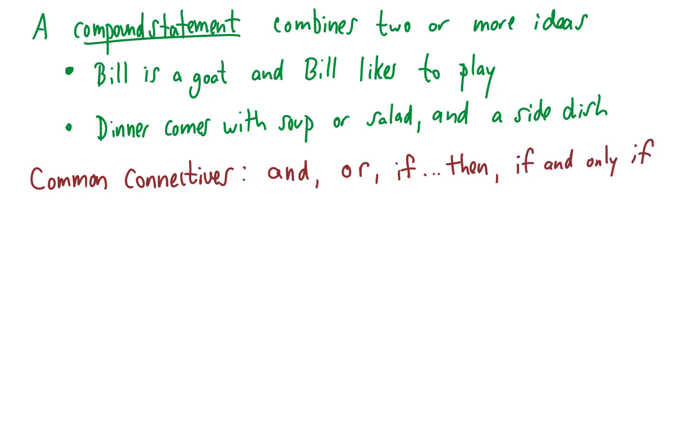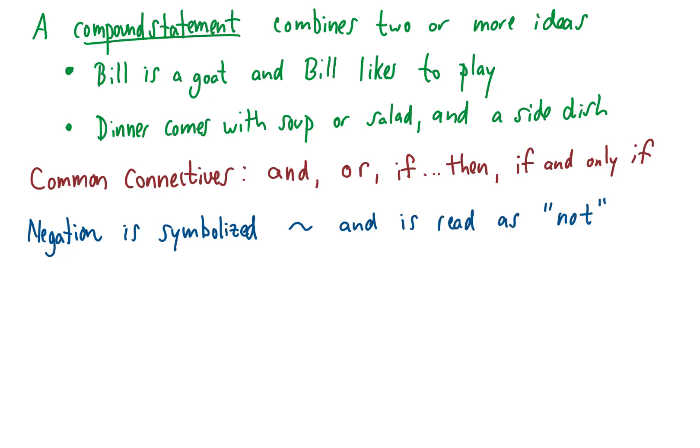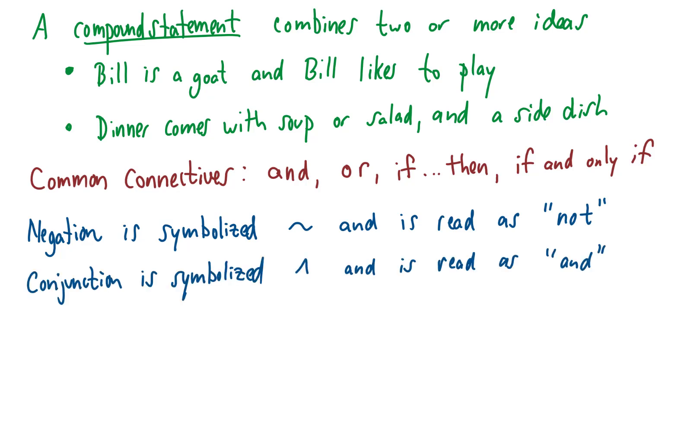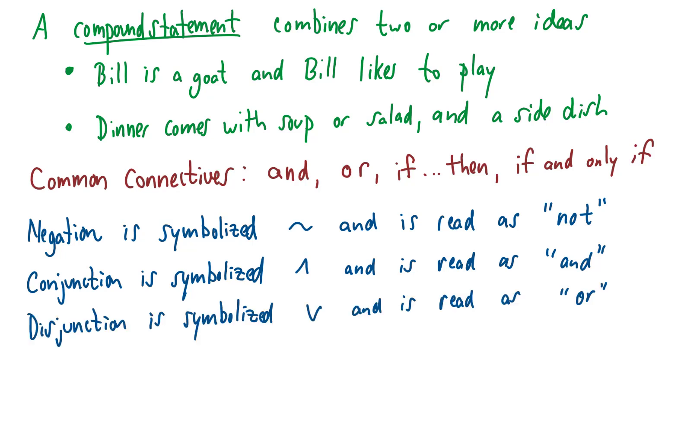Let's talk about some symbols we use for logic. We use a tilde symbol to denote negations, read as 'not'. We use this wedge symbol to represent 'and', and that's called a conjunction. We use this symbol to represent 'or', and we call that a disjunction.